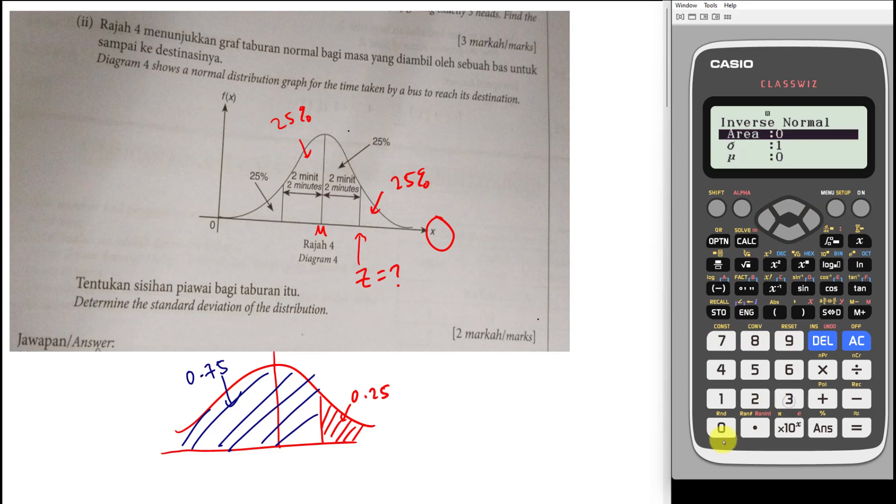Go to the seven, go to the inverse normal. I just insert my 0.75 and I should be able to get the answer, which is 0.674. Then this probability actually tells me my z value here is 0.674.